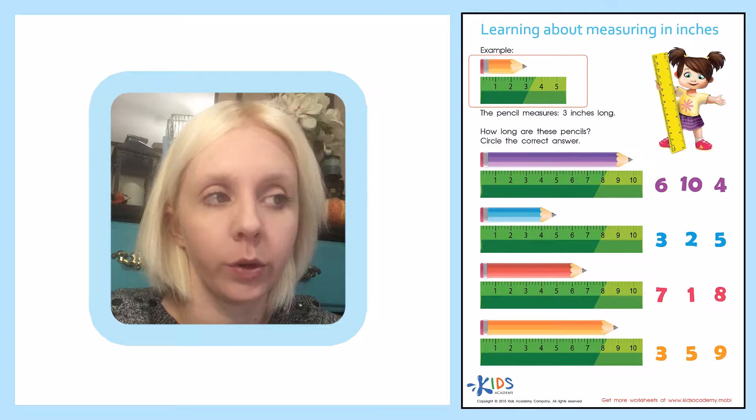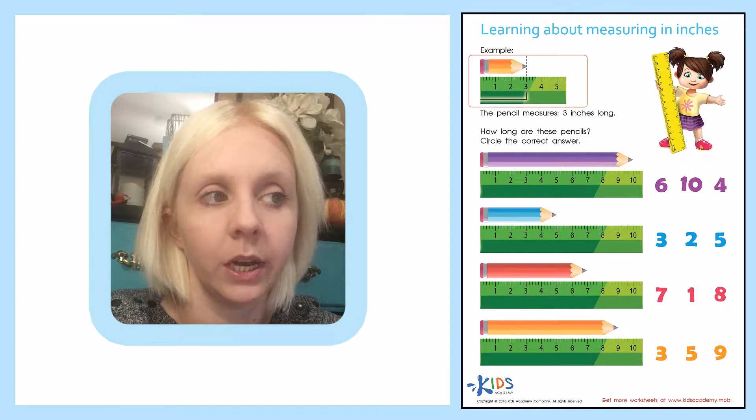If I were to take this little pencil and lay it against my ruler, I would line up the end of the pencil with the very beginning of my ruler right here. And then I would figure out how long it is. So it would go to right here. This is the end or the point. So the pencil measures three inches long. It's right up to the three right here.